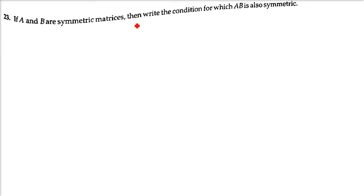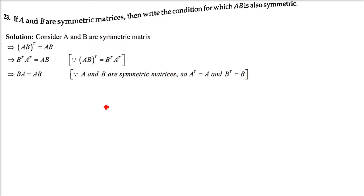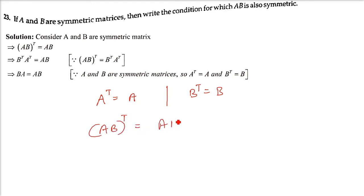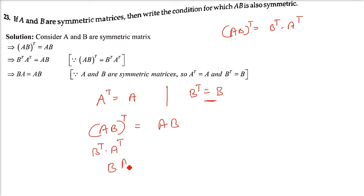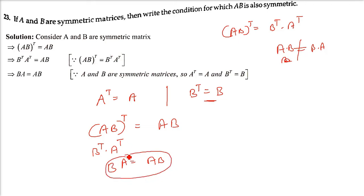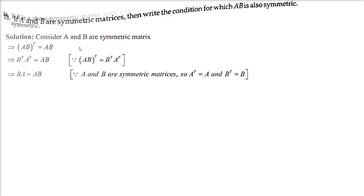Next question: if A and B are symmetric matrices, write the condition for which A·B is also symmetric. Since A is symmetric, Aᵀ = A; since B is symmetric, Bᵀ = B. For AB to be symmetric, (AB)ᵀ must equal AB. Using (AB)ᵀ = Bᵀ·Aᵀ = B·A, the condition is that B·A = A·B, i.e., A and B must commute.